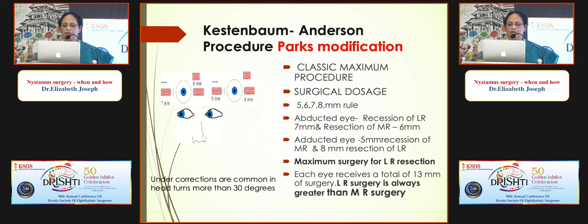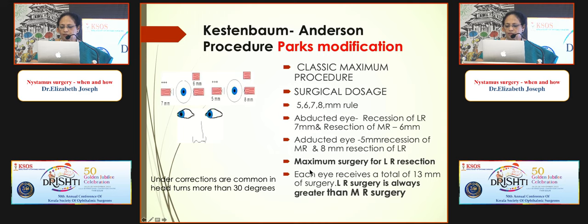In the classic maximum Parks-modified Kestenbaum-Anderson procedure: if the eyes are deviated to the right, perform recession of the right lateral rectus 7 mm, resection of the right medial rectus 5 mm, recession of the left medial rectus 5 mm, and resection of the left lateral rectus 8 mm. To remember which eye gets larger surgery: each eye receives an equal total amount — approximately 13 mm when MR and LR surgeries are combined. Lateral rectus surgery is always greater than medial rectus surgery because the medial rectus is more powerful. The maximum procedure covers up to 30 degrees of face turn.